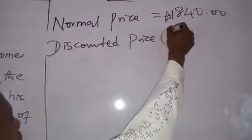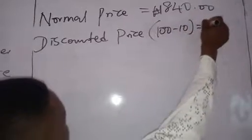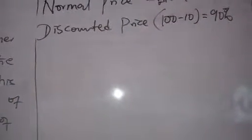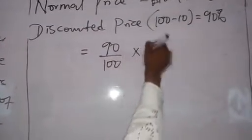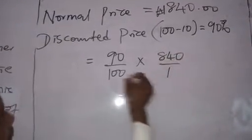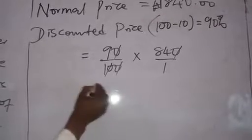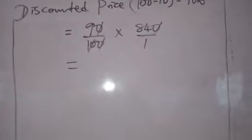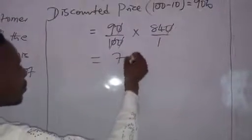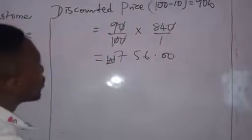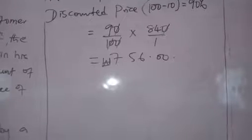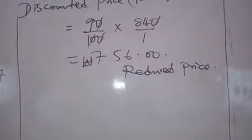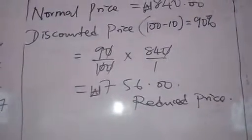Since he gave 10% discount, it is going to be 100 minus 10, which is 90% of the normal price. So it is going to sell the goods at 90% of the normal price. Therefore, we are going to get 90 over 100 times 840 over 1. When we cancel the zeros, 9 times 84 gives us 756 Naira. This is the reduced price.